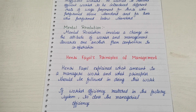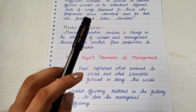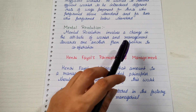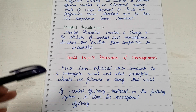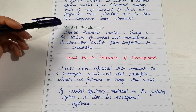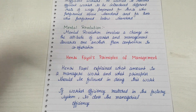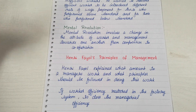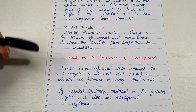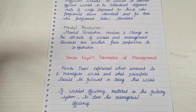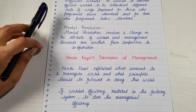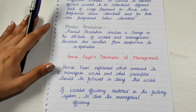Mental Revolution involves a change in attitude of workers as well as management towards one another — from confrontation to cooperation. It means it should not be a strict relationship where management just says 'we are giving you salary so you have to work for us.' It should not be a cut-to-cut relationship; it should be a harmonized relationship where both can benefit and develop together.